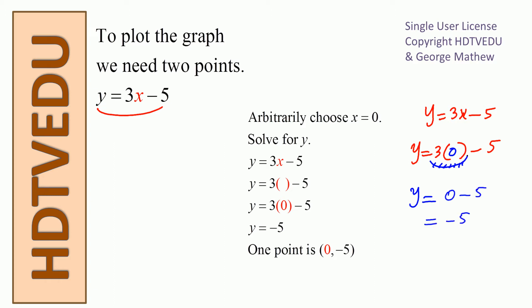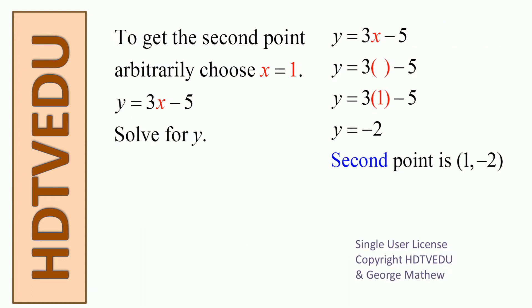That is negative 5. So when x equals 0, y is equal to negative 5. Do not forget, a point on the graph paper will always have x and y — x comes first. To get the second point, we substitute x equals something other than 0.